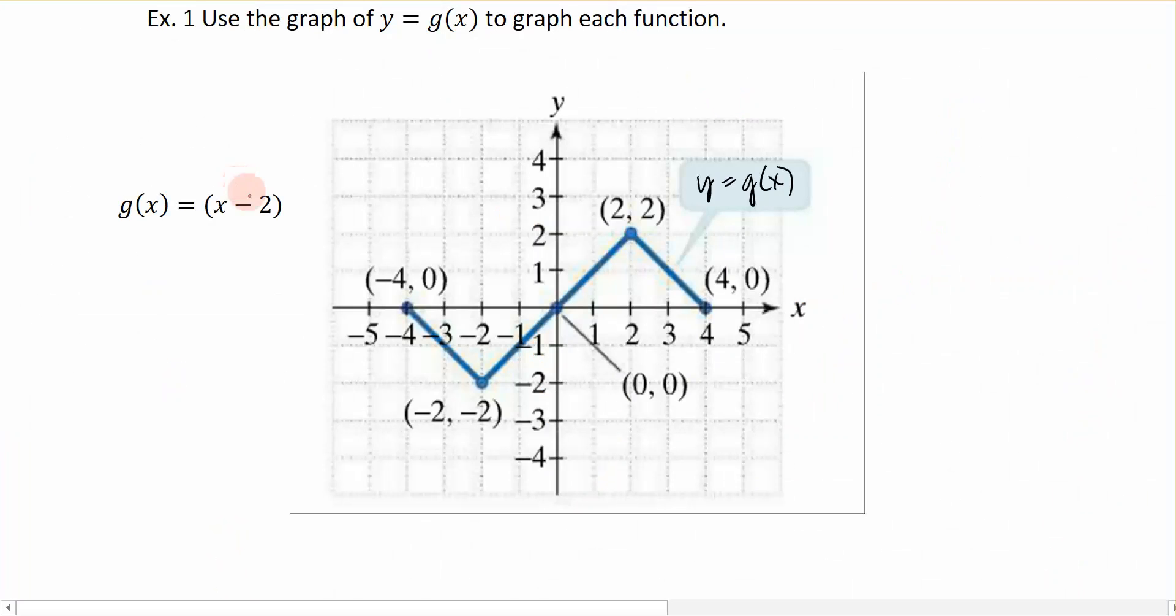So I said that if we are adding or subtracting inside of the function, we have horizontal shifts, we're going to be shifting left or right. And we are actually going to shift opposite in what you see here. So we'll be shifting to the right by 2. So how do we plot that? Well, we're going to take all of these points that are listed for me on the graph, and I'm going to shift them to the right by 2.